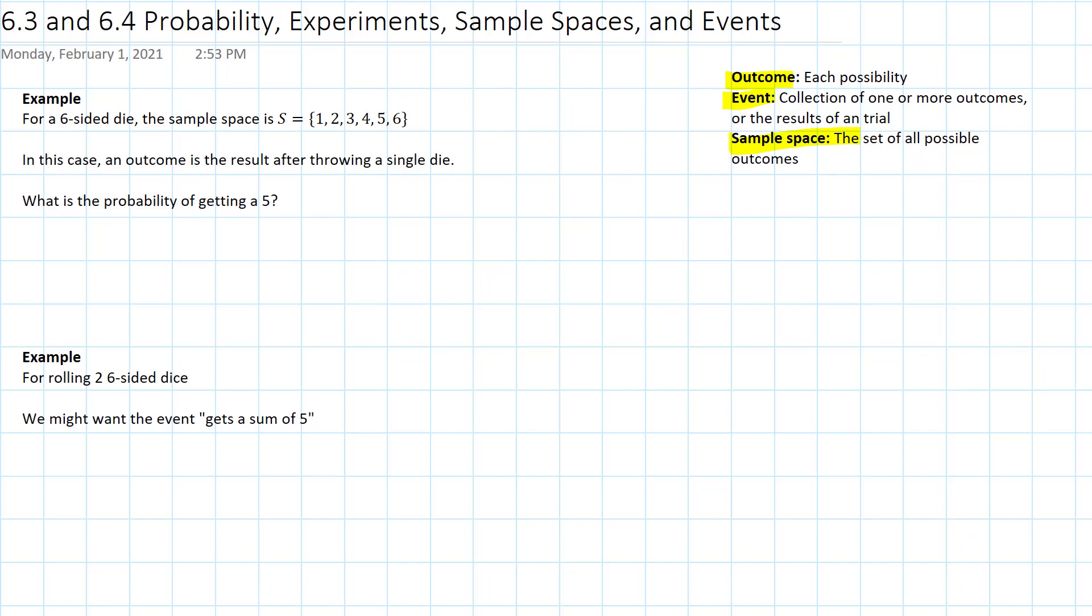In this case, for a six-sided die, the sample space is given as 1, 2, 3, 4, 5, and 6. Yeah, that seems pretty straightforward. In this case, the outcome is the result after you throw the die once. So what's the possibility of getting a 5 if you do this? Well, the probability of getting each one, I mean, this is pretty simple. There's a, it's 1 sixth, right, of getting a 5. Same thing would happen if I did a 3. It would just be 1 sixth.